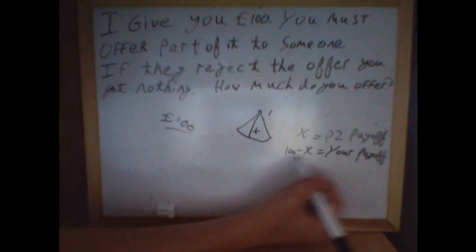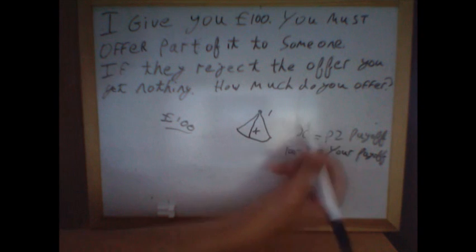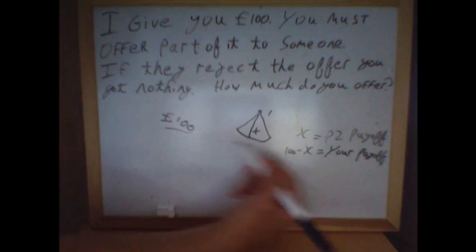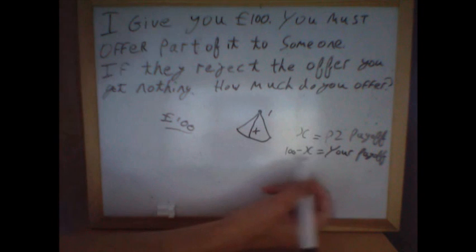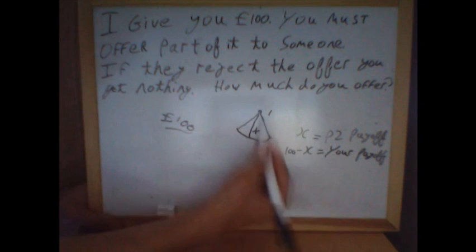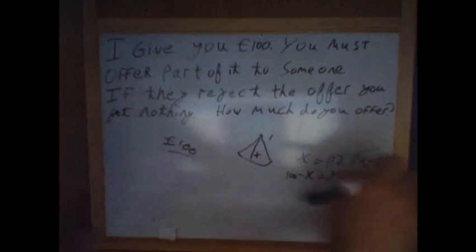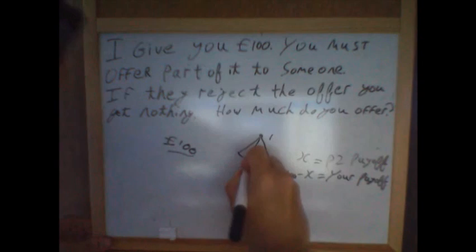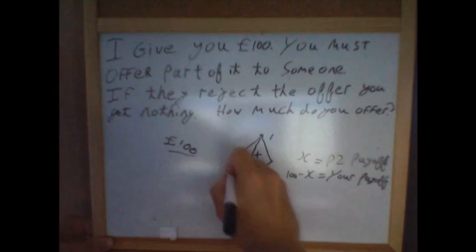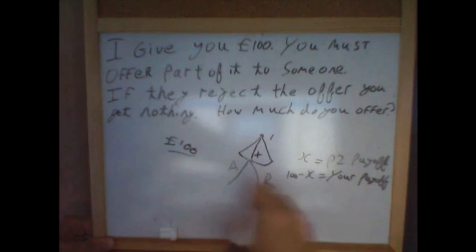This is clearly what you're trying to maximise — what you receive is 100, the total amount, minus the amount you offer. So this is your decision: how much do you offer? Then player two has to make the decision whether to accept or reject the offer you give them.